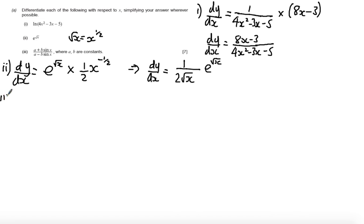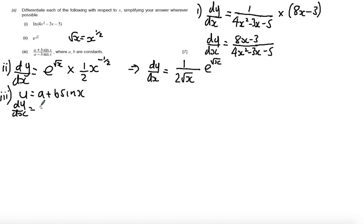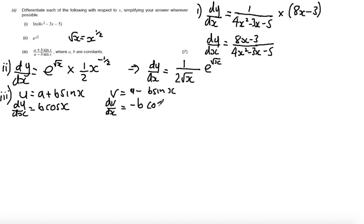Part 3: we need to differentiate (a plus b sine x) over (a minus b sine x), where a and b are constants. Notice this is a quotient — a fraction with a function of x on the numerator and denominator. So I'll let u equal a plus b sine x, so du/dx equals b cos x. And v equals a minus b sine x, so dv/dx equals minus b cos x.